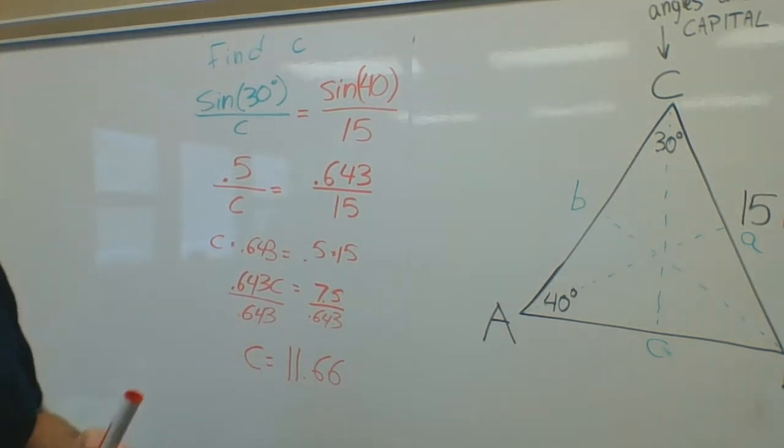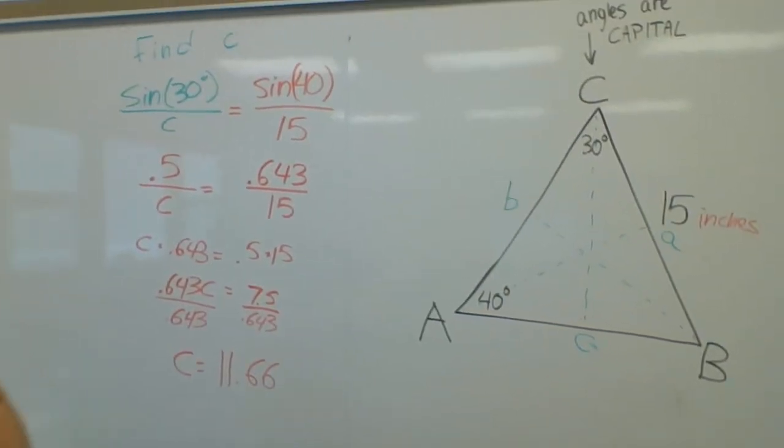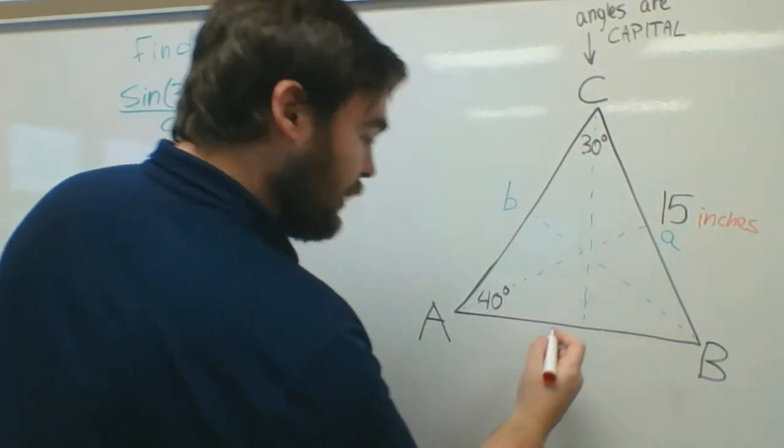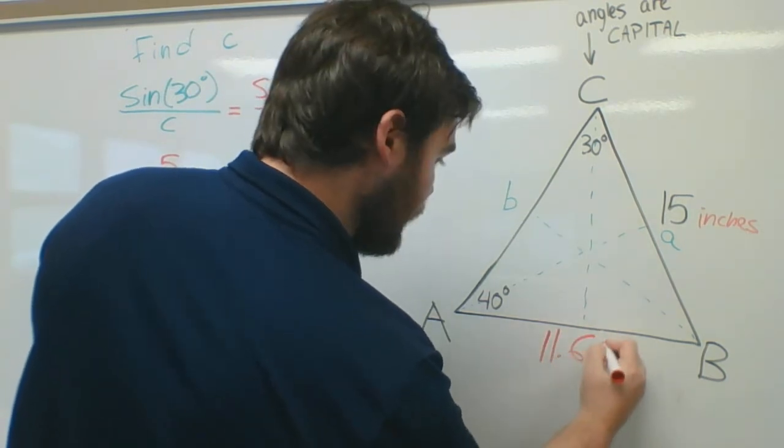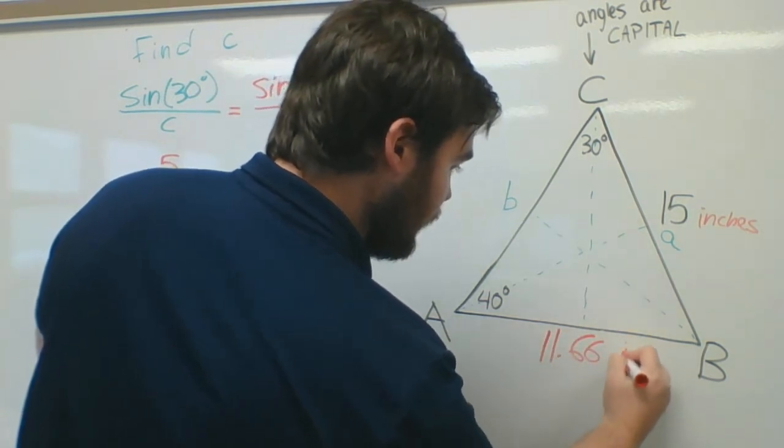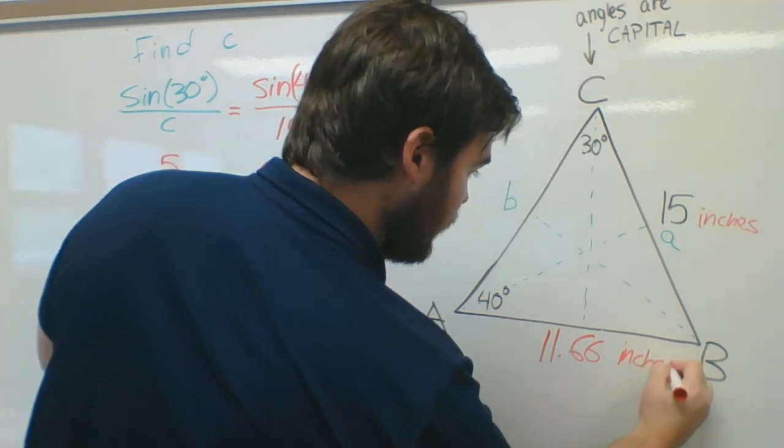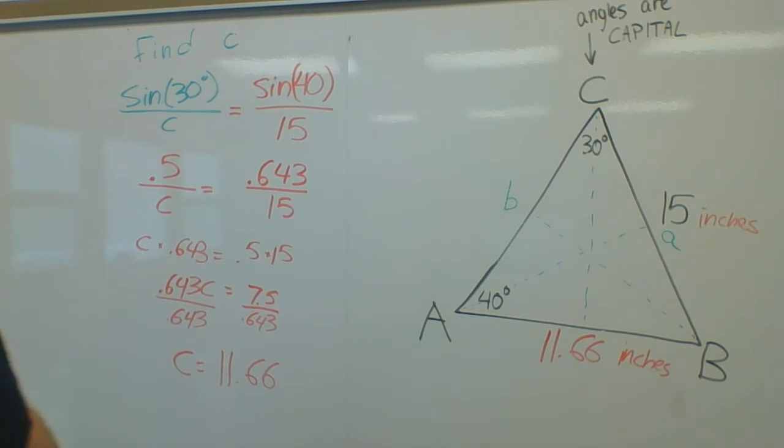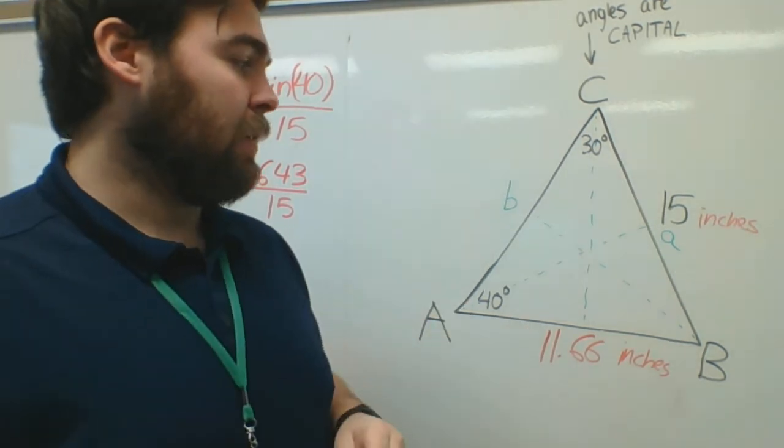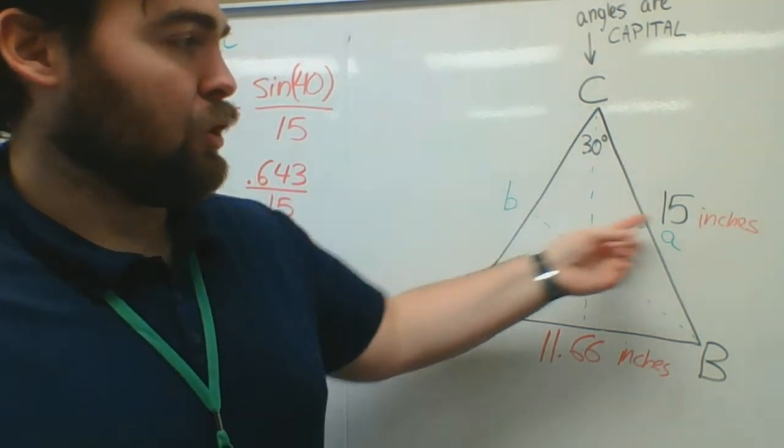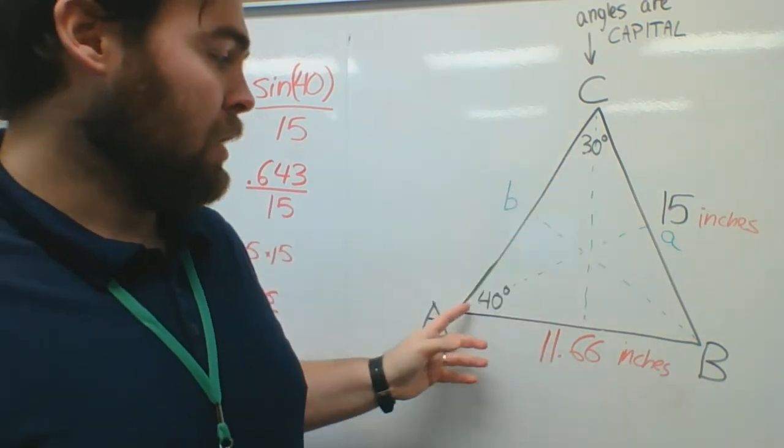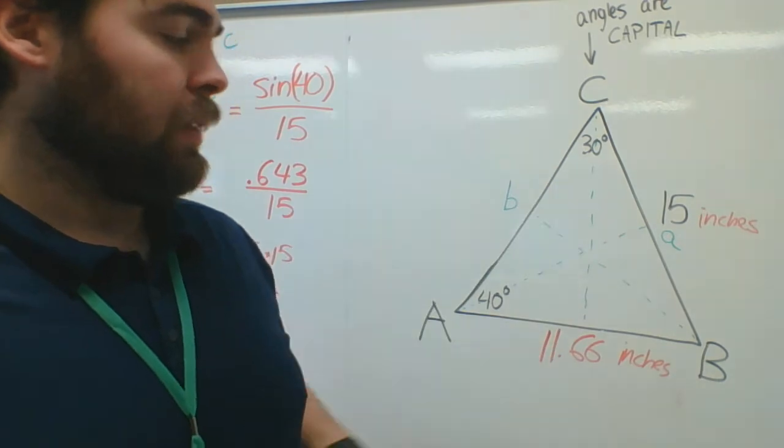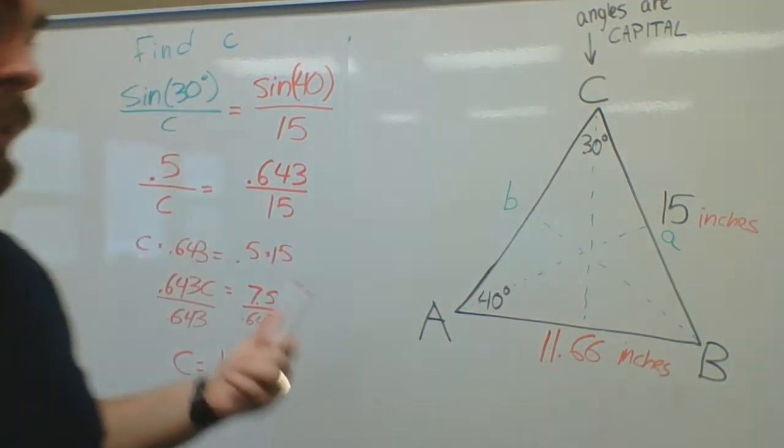So, C is equal to 11.66. What does that mean for the graph? For the graph, that means this here, this side length, is 11.66 inches. Or miles or whatever. It should make sense like that. So this is 40 degrees. This should be a little bit bigger than the 30 degree angle. So 40 is bigger than 30. So 15 should be bigger than this number, which is. So we're done.